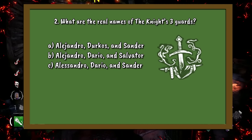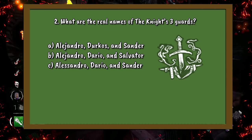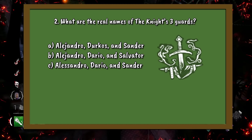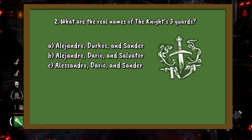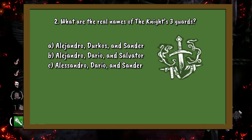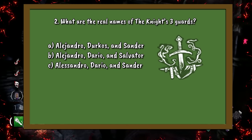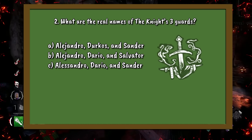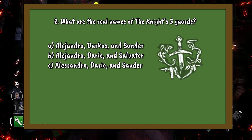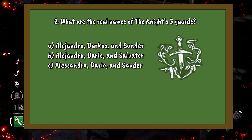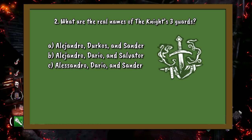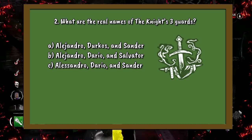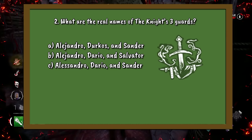Question number 2. What are the real names of the Knight's three guards? A. Alejandro, Dercos, and Sander. B. Alejandro, Dario, and Salvatore. Or C. Alessandro, Dario, and Sander.